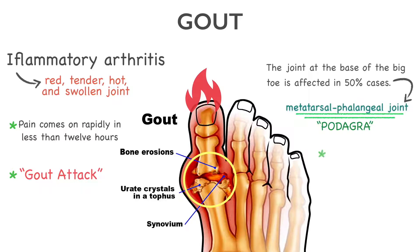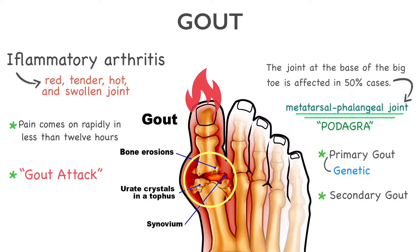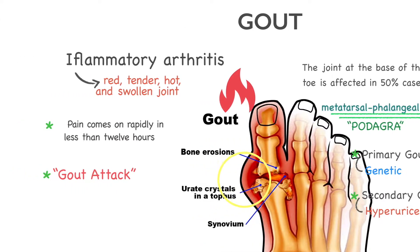There are two major types of gout: primary gout and secondary gout. Primary gout is classified as an inborn error of purine metabolism due to genetic factors. In primary gout, production of uric acid exceeds the body's excretion capability. Secondary gout involves hyperuricemia caused by another disease or factor, such as renal insufficiency, multiple myeloma, and cardiovascular disease.